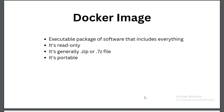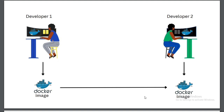The fourth property of images is portability. If Developer One has done some work and wants to share it with Developer Two, she creates a Docker image — which is essentially a portable zip/7z file — and transfers it to Developer Two, who imports it into their machine. This is how we use Docker images to transfer work.